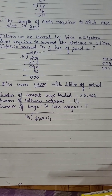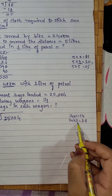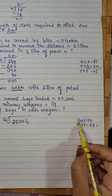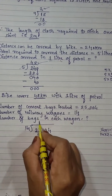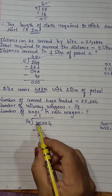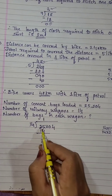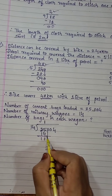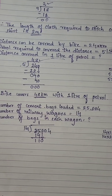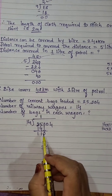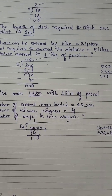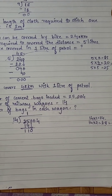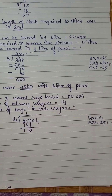Subtract: 5 minus 4 is 1, 2 minus 1 is 1 — giving 11. Bring down the next number 0, making it 110. Read the 14 table: 14×7=98, 14×8=112. Since 112 is bigger than 110, take the lesser: 14 sevens are 98.